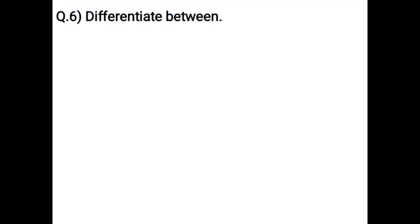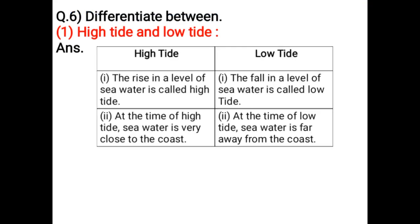Differentiate between High Tide and Low Tide. The rise in the level of seawater is called High Tide, while the fall in the level of seawater is called Low Tide. At the time of High Tide, seawater is very close to the coast. At the time of Low Tide, seawater is far away from the coast.